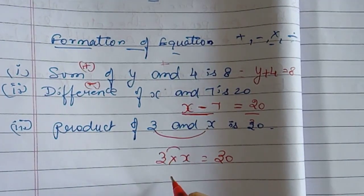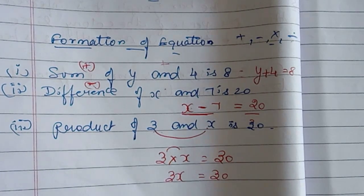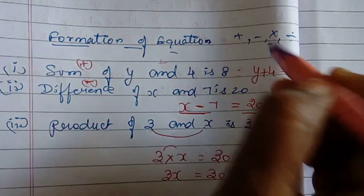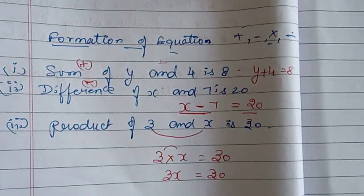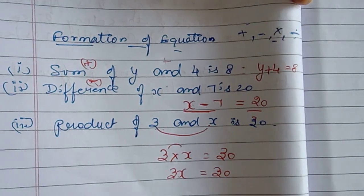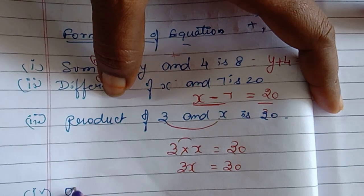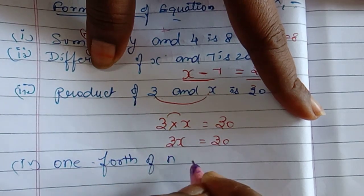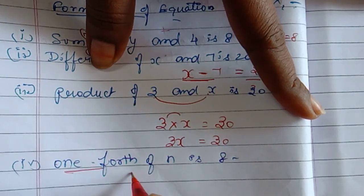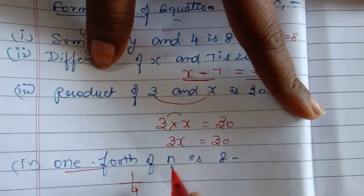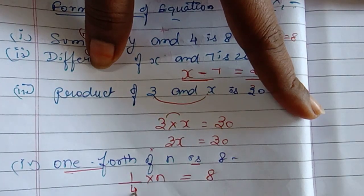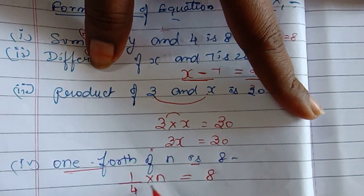If you have a sentence, you can form an equation. The other operation is division. One fourth of n is 8. One fourth means one by four. One by four — 'of' means the multiplication sign. So one by four times n is equal to 8. That gives us the equation n divided by 4 equals 8.